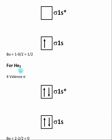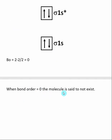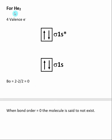Finally, we look at He2 and determine if it's possible to form a bond between two helium atoms. Each helium has two valence electrons, so this molecule would conceivably have four valence electrons. When the two heliums come near each other, their orbitals combine to form molecular orbitals, and we see that both the bonding and antibonding molecular orbitals are filled. The bond order is two electrons in bonding minus two in antibonding, divided by two — giving a bond order of zero. When the bond order equals zero, the molecule is said to not exist, which is expected since helium is a noble gas and is not typically involved in bonding.